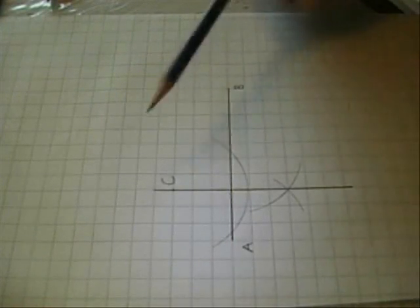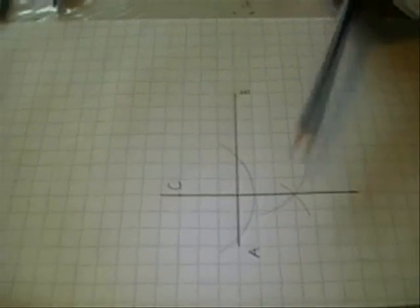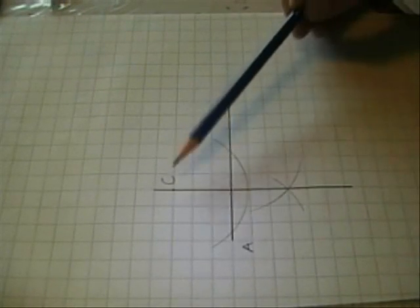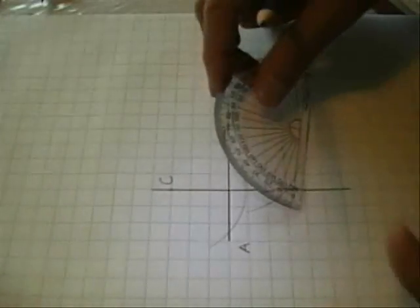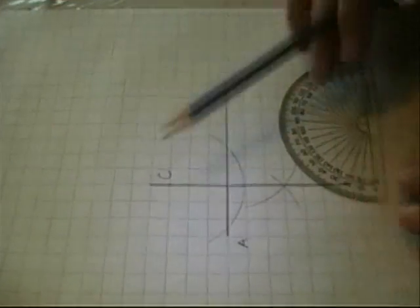And you can see clearly that this line is perpendicular to AB going through C and just to check we'll measure this angle here.